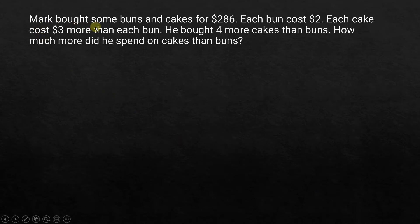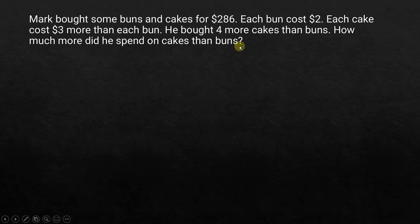Mark bought some buns and cakes for $286. Each bun cost $2. Each cake cost $3 more than each bun. He bought 4 more cakes than buns. How much more did he spend on cakes than buns? This might look a bit complicated, but if we start doing it step by step, things would become easier.